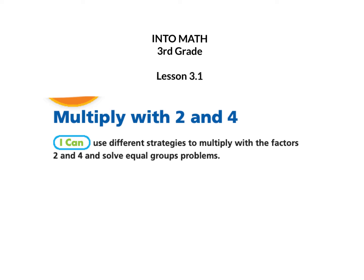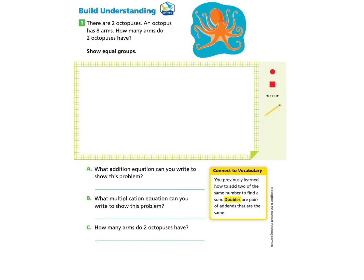This is Into Math third grade lesson 3.1: Multiply with Two and Four. The I can statement is: I can use different strategies to multiply with the factors two and four and solve equal group problems. Please gather your workbook and a pencil and turn to page 62.